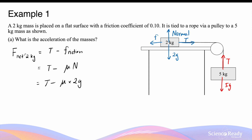Using Newton's second law, we can replace the net force acting on the mass by the mass itself, 2kg, multiplied by its acceleration — let's call that A. We can then rearrange the equation to make tension the subject, which gives us T = 2A + 2μg. This is our first equation.